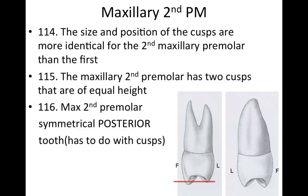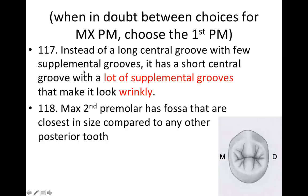For the maxillary second premolar, the size and position of the cusps are more identical than for the first premolar. On the second premolar the cusps are about the same height, whereas on the first the buccal cusp is about a millimeter higher. The maxillary second premolar has two cusps of equal height, making it the most symmetrical posterior tooth.